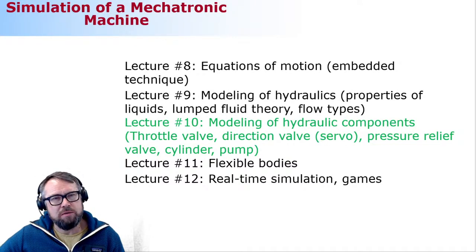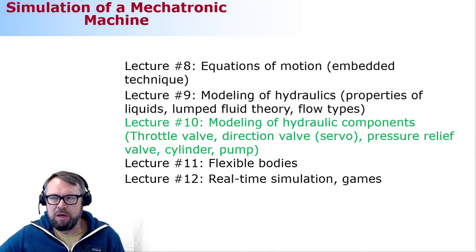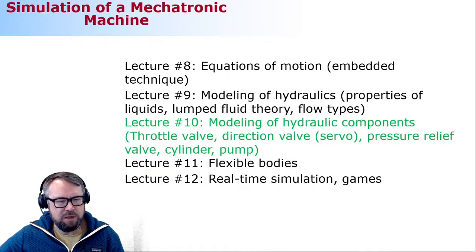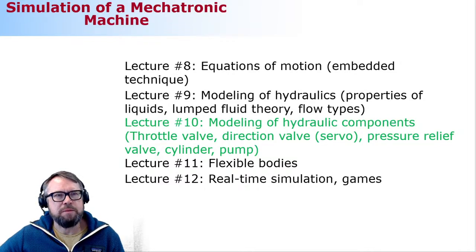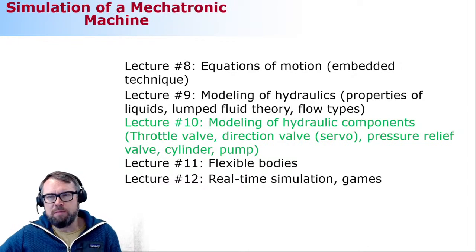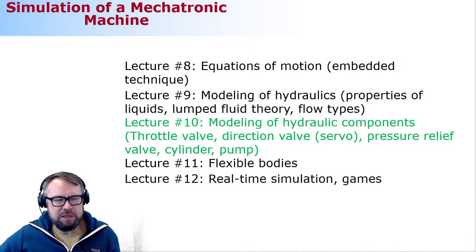Today we're going to close the discussion about hydraulic modeling. I would like to introduce you to several different component models: a throttle wall, which is a very simple hydraulic component model. The main body of today's description is directed to direction valve, which is operated by magnets — something currently heavily used. Then, as a reading assignment, a pressure relief valve, and of course cylinder and a pump. Those will be the components we need to describe to model the hydraulic circuit. Once we're done with that, I have an example of how to model a hydraulic circuit from beginning to end.